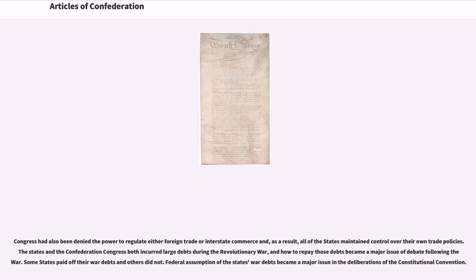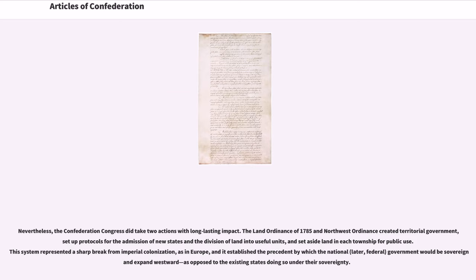Congress had also been denied the power to regulate either foreign trade or interstate commerce, and as a result, all of the states maintained control over their own trade policies. The states and the Confederation Congress both incurred large debts during the Revolutionary War, and how to repay those debts became a major issue of debate following the war. Some states paid off their war debts and others did not. Federal assumption of the states' war debts became a major issue in the deliberations of the Constitutional Convention.